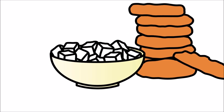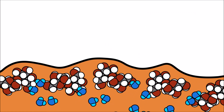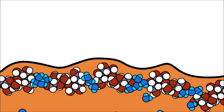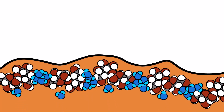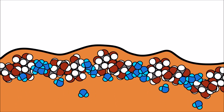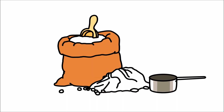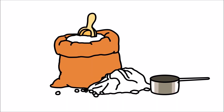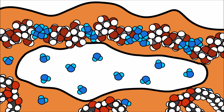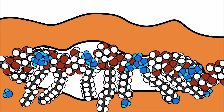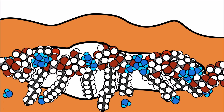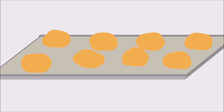Sugar not only makes the cookies taste sweet, but it also binds together with the water molecules. This traps the water molecules inside and makes the cookies moist. Flour also affects the structure of the cookies. Flour absorbs water and glues the fat and sugar together — having the right amount of flour is very important. Adding too much flour will absorb all of the water and dry out the cookie. Adding too little flour will make the cookies too runny.